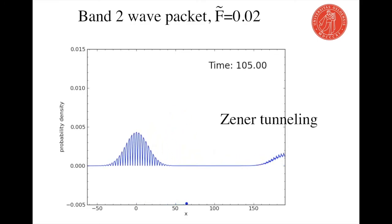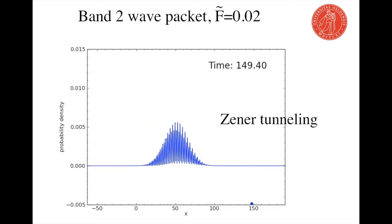Bloch oscillations are seen here also, but every time the wave packet turns around on the right side it sheds off a piece which just continues to propagate to the right. This is what is known as Zener tunneling.